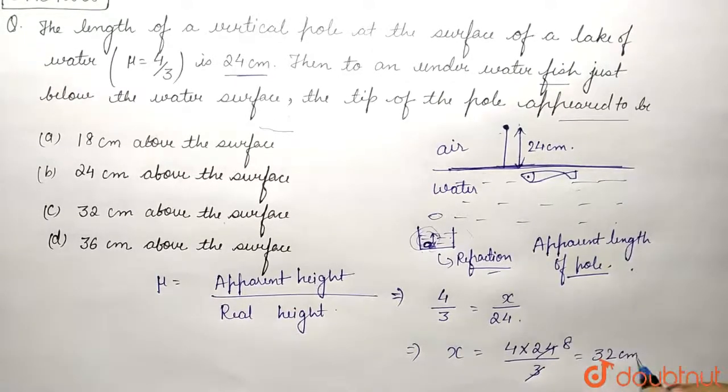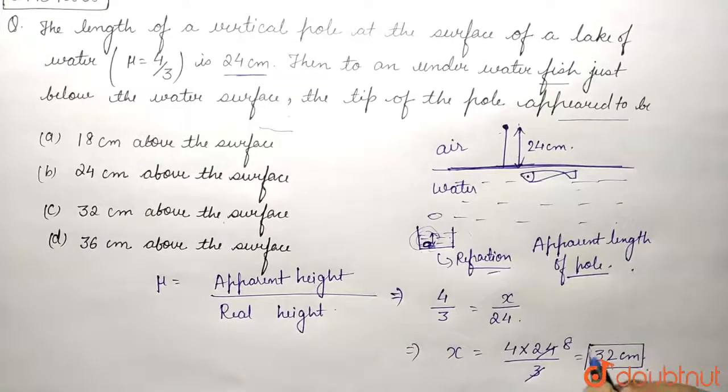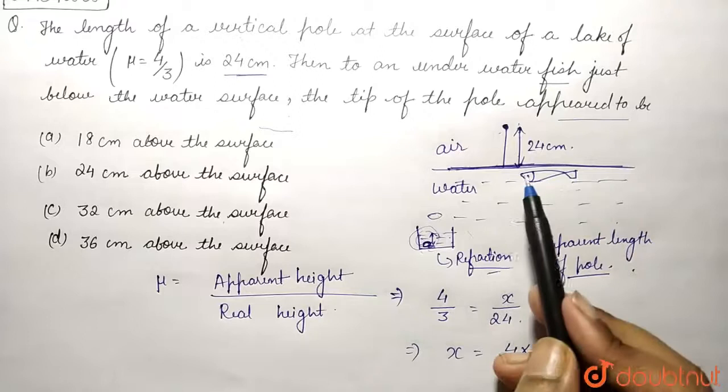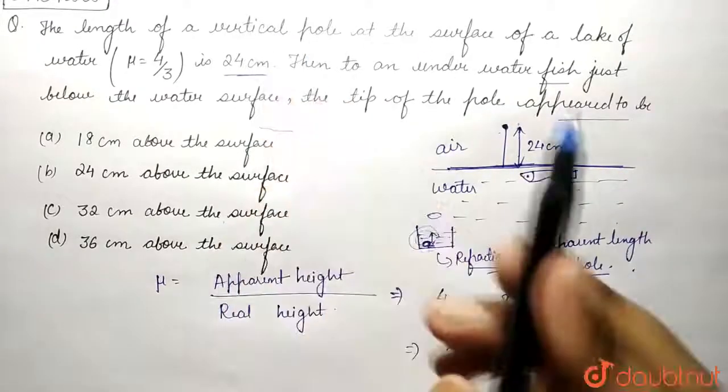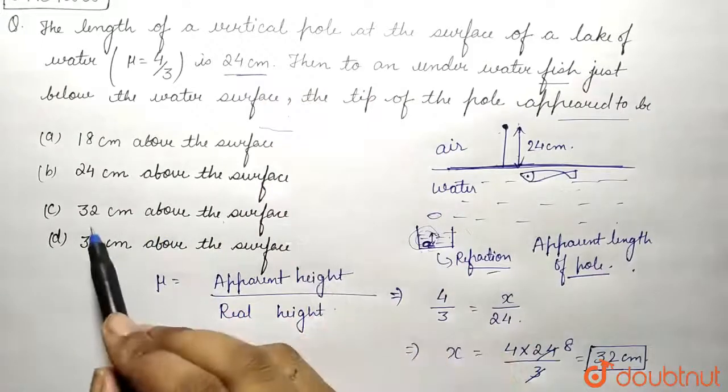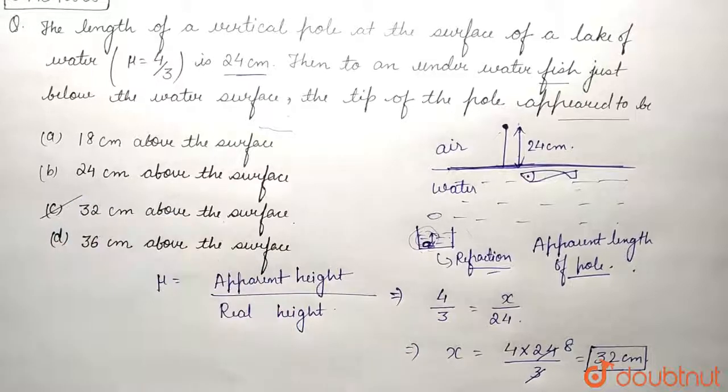So this is the distance above which the fish will find the tip of the vertical pole. We can see that option C, 32 centimeter above the surface, is the correct answer.